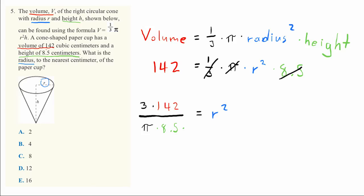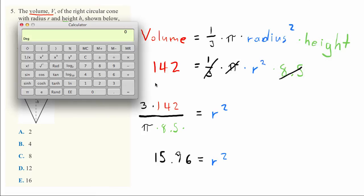Let's write this: 15.96 equals R squared. The last step is to take the square root. Using the calculator, the square root of 15.96 is 3.99.